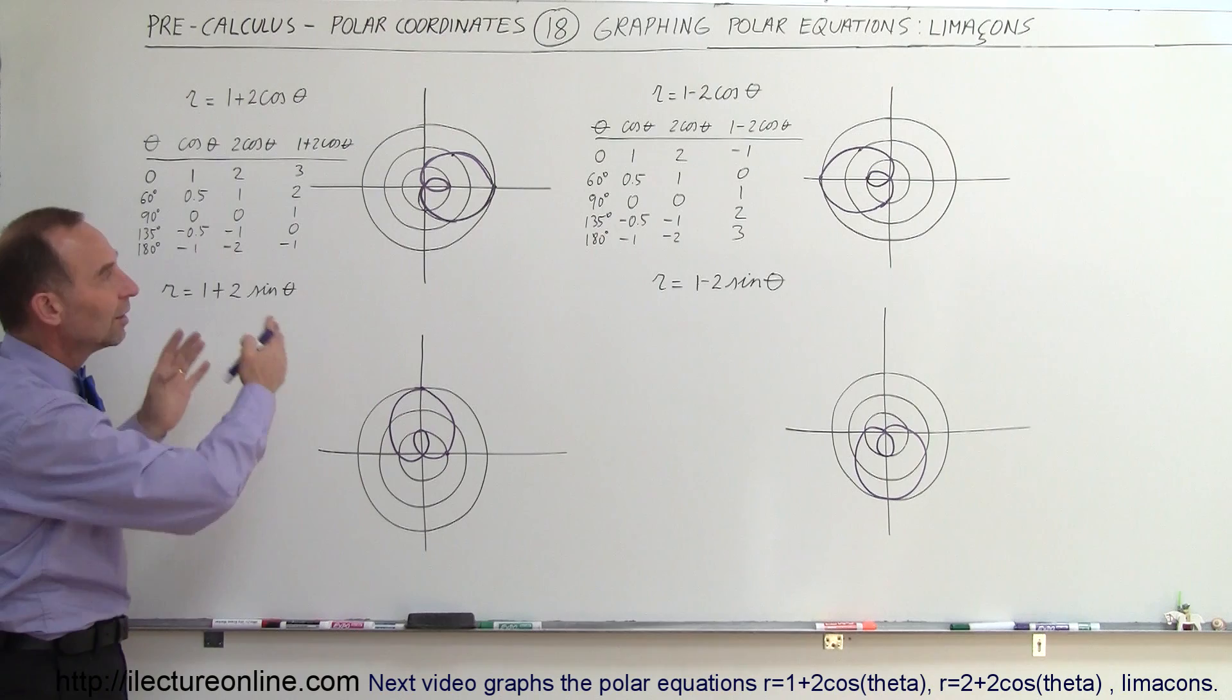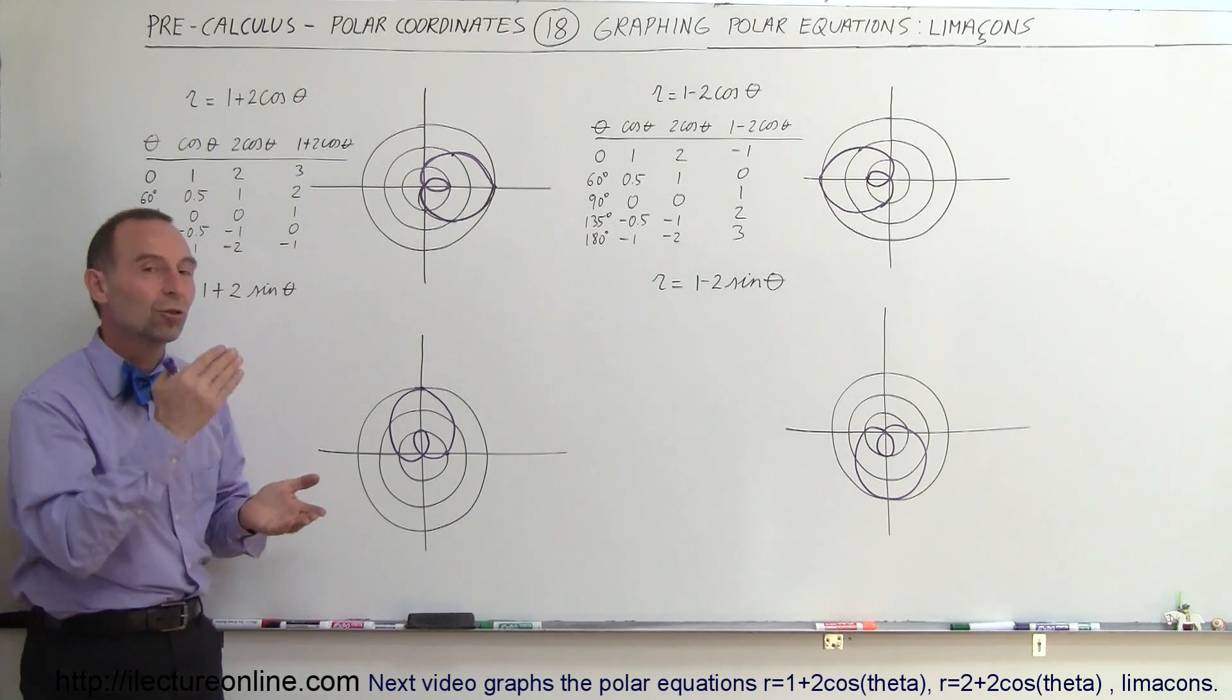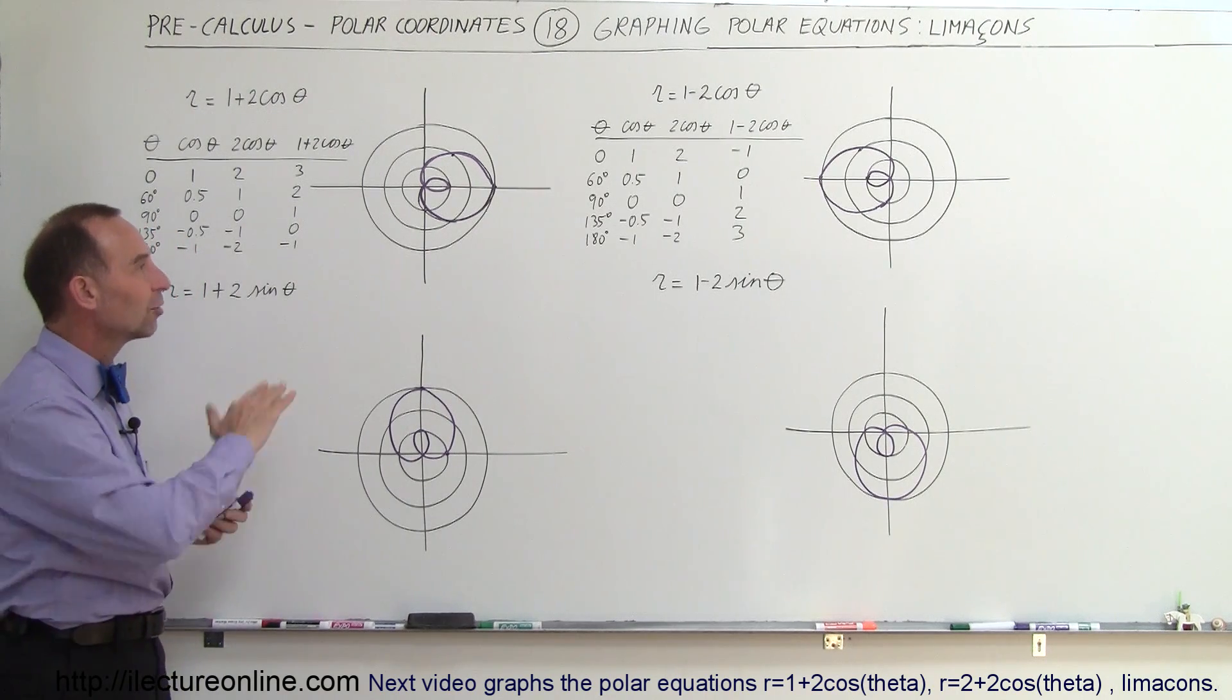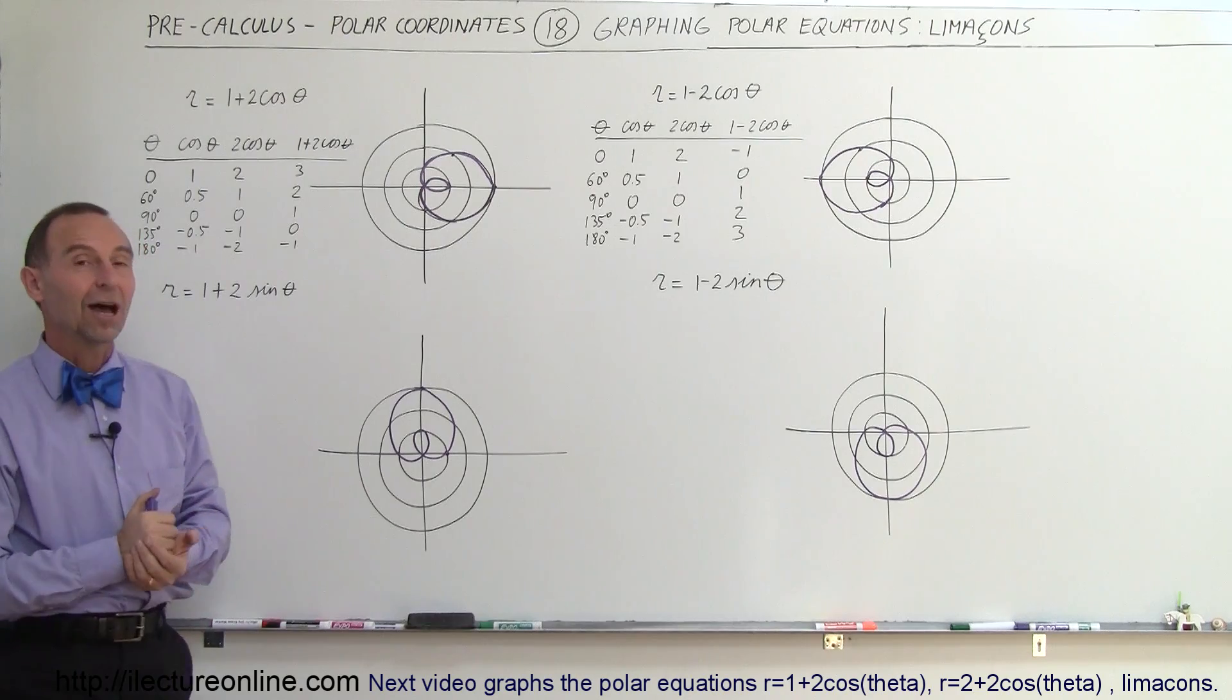But at least it gives you a basic idea of how the various forms of that equation cause the limaçon shape to change in direction for sine and cosine and direction for the plus or minus sign as well. And that's how we do that.